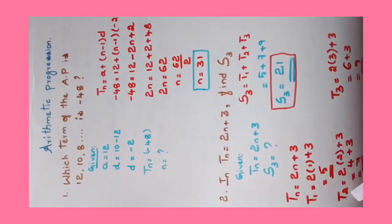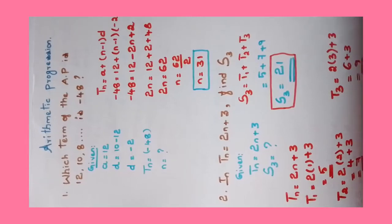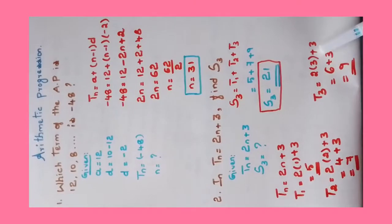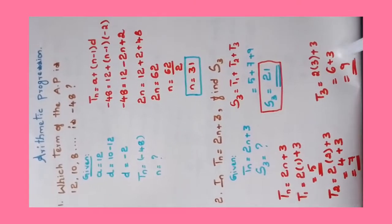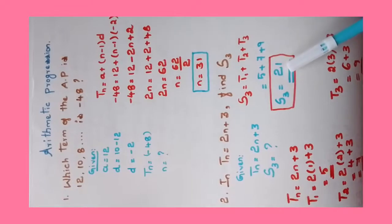T1 = 2(1) + 3, so 2*1 = 2, 2 + 3 = 5. T2: substitute n = 2, 2*2 + 3 = 4 + 3 = 7. T3 = 2*3 + 3 = 6 + 3 = 9. Hence we got the values of T1, T2, and T3. Substitute: T1 is 5, T2 is 7, T3 is 9. Add them up, you'll get the answer 21. This is the required answer, S3.